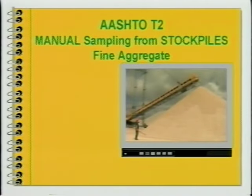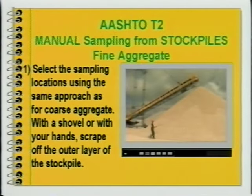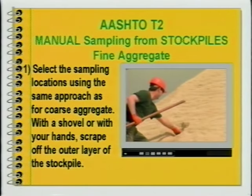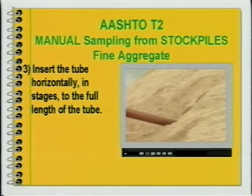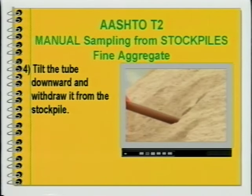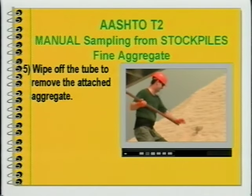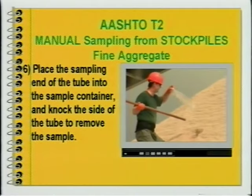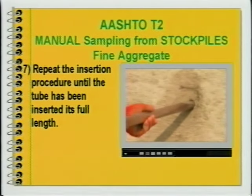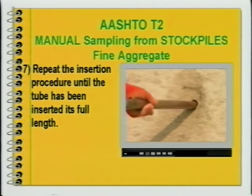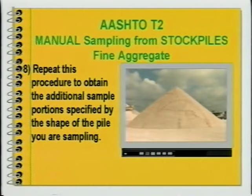To review the procedures for manual sampling from a fine aggregate stockpile: 1. Select the sampling locations using the same approach as for coarse aggregate. With a shovel or with your hands, scrape off the outer layer. 2. Take the fine aggregate sample with a metal sample tube. 3. Insert the tube horizontally in stages to the full length of the tube. 4. Tilt the tube downward and withdraw it from the stockpile. 5. Wipe off the tube to remove the attached aggregate. 6. Place the sampling end of the tube into the sample container and knock the side to remove the sample. 7. Repeat the insertion procedure until the tube has been inserted its full length. 8. Repeat to obtain the additional sample portions specified by the shape of the pile.